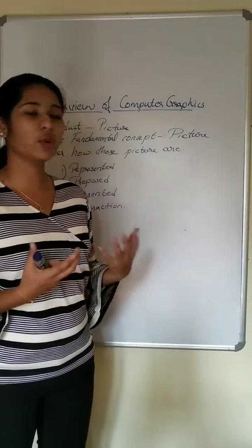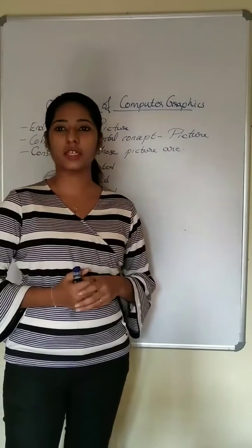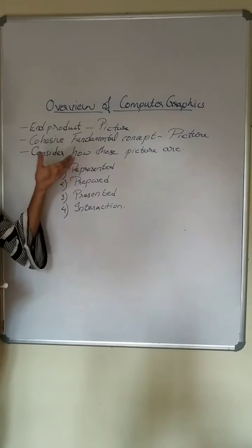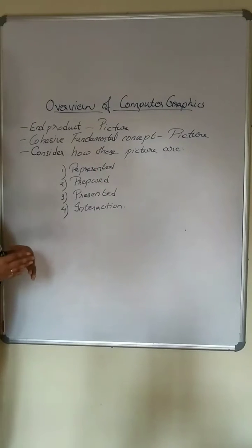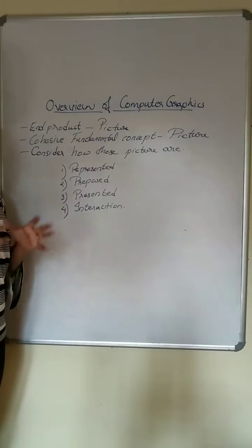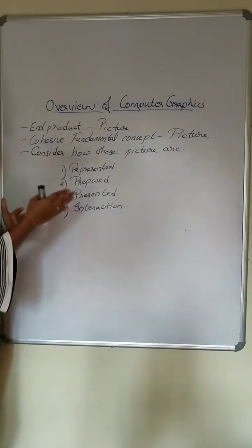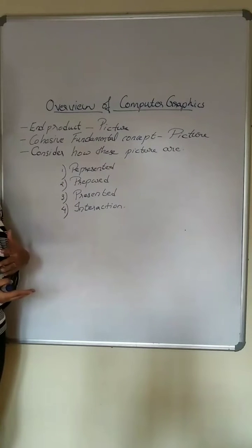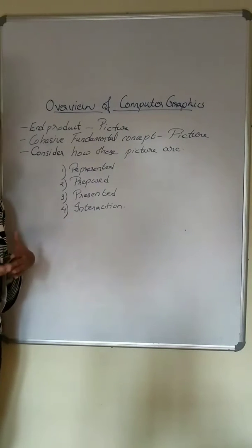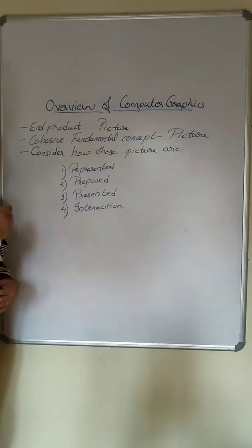Today in our class, Computer Graphics is the first topic — Overview of Computer Graphics. The end product of Computer Graphics is the picture. We can say that the fundamental concept of Computer Graphics is the picture itself. We should consider how these pictures are represented, prepared, presented, and how interaction with the pictures is accomplished. These four things are to be considered when coming to Computer Graphics.